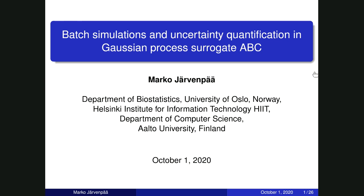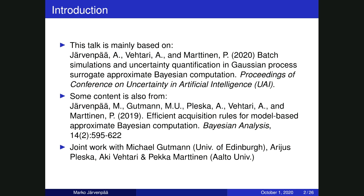Thank you Massi for the introduction, and I also want to thank the organizers for inviting me to give a talk. My presentation is about Gaussian process surrogate modeling to resolve certain computational challenges in ABC. My talk is based on our recent paper in UII, but when I was preparing these slides, I realized it would also be good to review some contents from our earlier paper, which is now published in Bayesian Analysis.